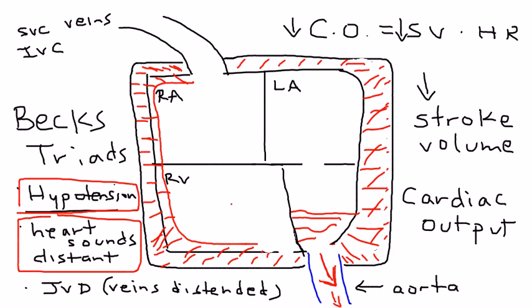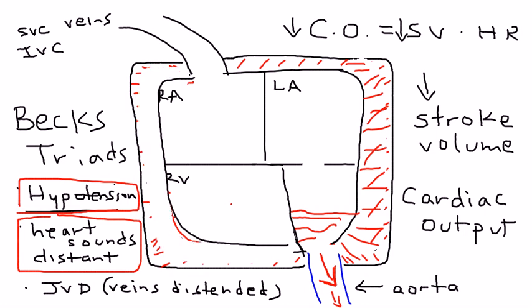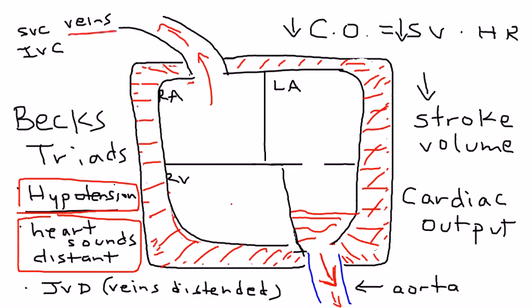The last component — jugular venous distension: why does that happen? All the blood built up in the pericardium essentially makes the right atrium and right ventricle smaller. That causes fluid to back up into the veins, and when that happens these veins get distended. So remember Beck's triad — don't just memorize it, understand why it's happening and it will make sense.